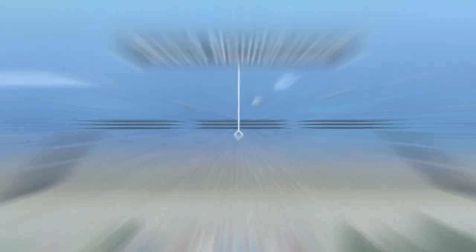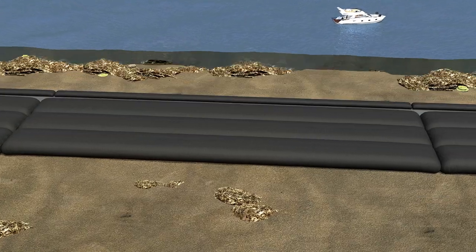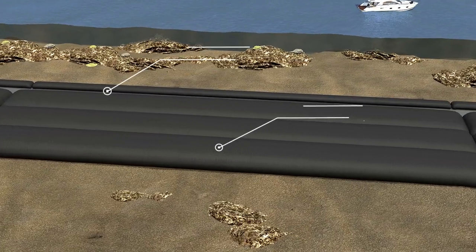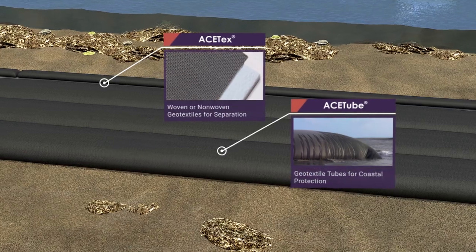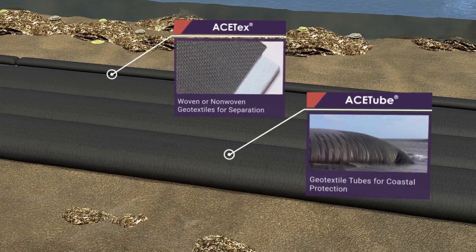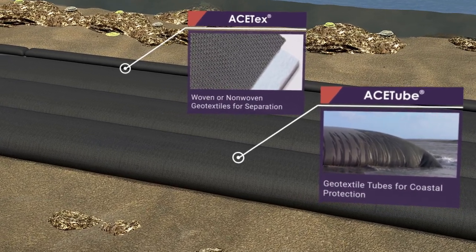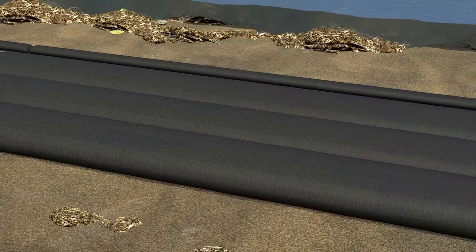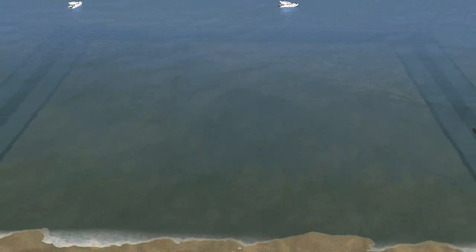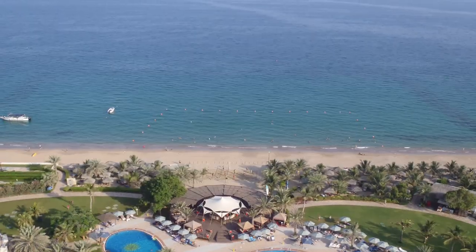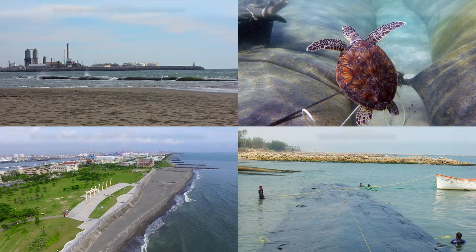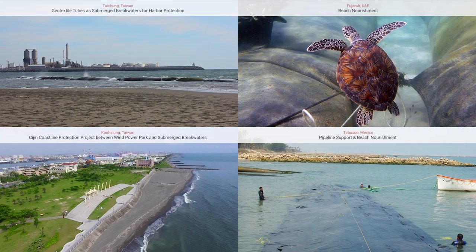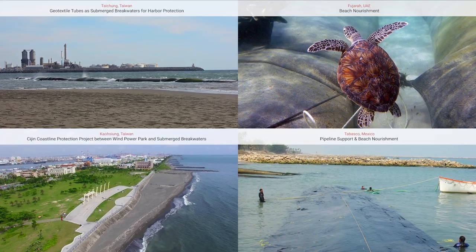Beach Nourishment: Utilizing ACE tube geotextile tubes to build offshore breakwaters, submerged breakwaters, long dikes and other hydraulic structures can encourage littoral sands to accumulate and to nourish and extend existing beaches. ACE tube geotextile tube is highly water permeable and efficient to install. The malleable contours may conform to the terrain and increase its ability to resist erosion caused by seawater.